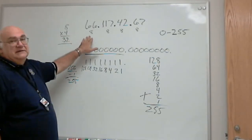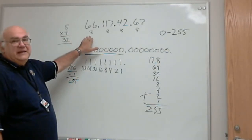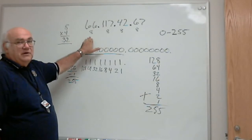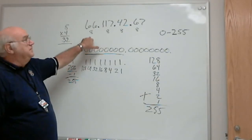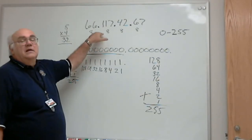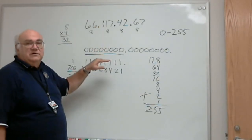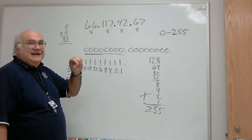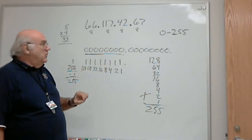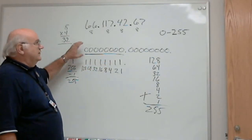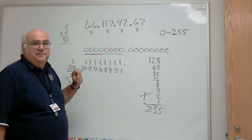Dotted decimal — this is how we get it. Eight bits per decimal number, separated by dots. IP version 4 addressing on the internet. Layer 3 network addressing. This is how it works.